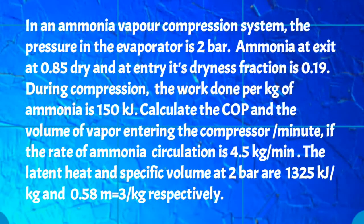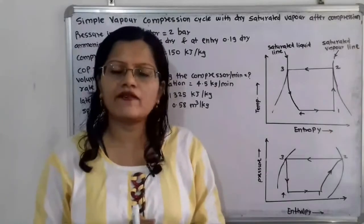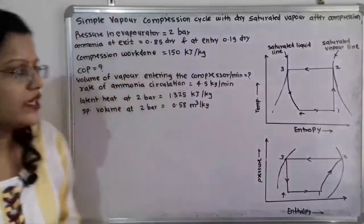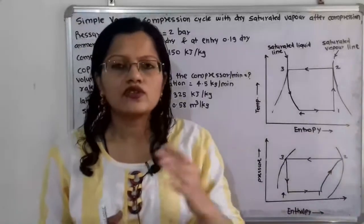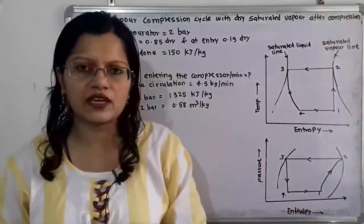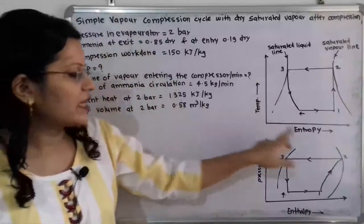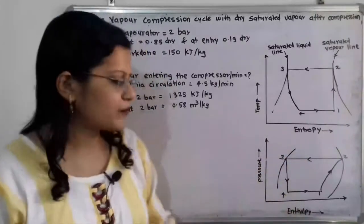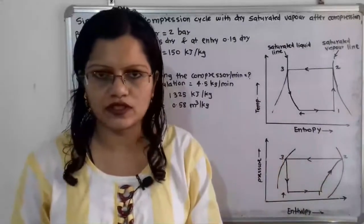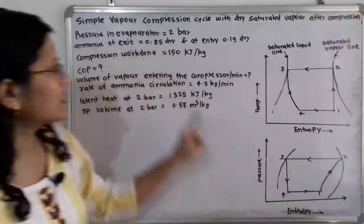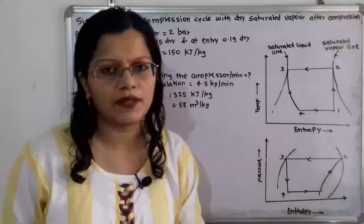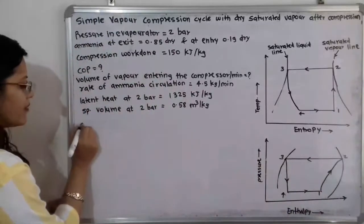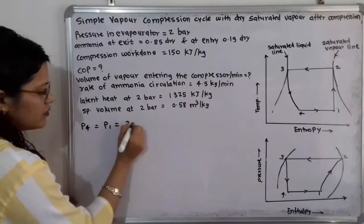Calculate the coefficient of performance and the volume of vapor entering the compressor per minute if the rate of ammonia circulation is 4.5 kilogram per minute. The latent heat and specific volume at 2 bar are 1325 kilojoule per kilogram and 0.58 meter cube per kilogram respectively. In the temperature-entropy and pressure-enthalpy diagram, process 4 to 1 is the evaporation process at constant pressure, so p4 = p1 = 2 bar.